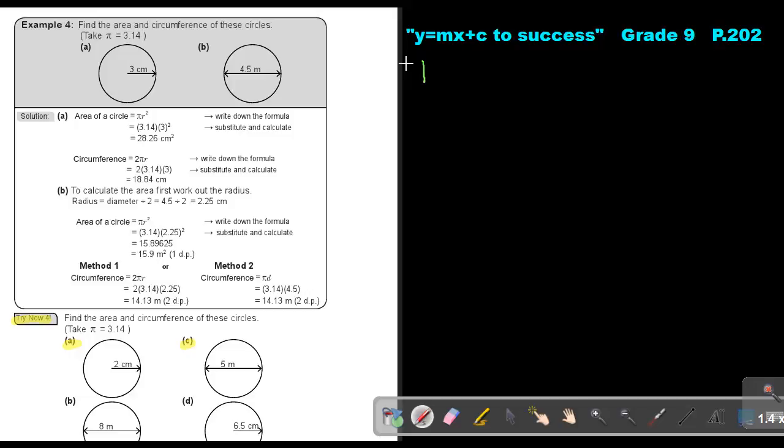Let's start. Try Now 4, and I'm going to start with number A. If I ask you, find the area and circumference of the circles. So what is the area of the circle?